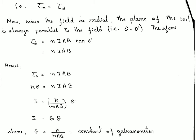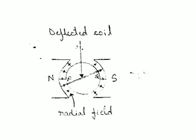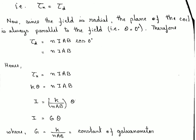Since the field is radial, the plane of the coil is always parallel to the field, meaning theta (the angle between the plane of the coil and the field) is always zero. Therefore the deflecting torque = NIAB cos 0° = NIAB. At equilibrium, the restoring torque equals the deflecting torque: K theta = NIAB.